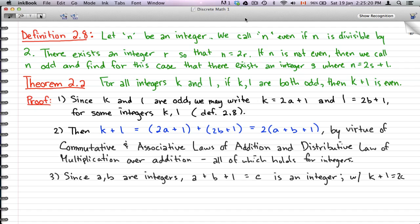So if n is not even, then we call n odd, and we find that for this case there exists an integer s where we have n equals 2s plus 1. Now if we have s and we times that by 2, it will become odd. The plus 1 is what makes the whole thing even.